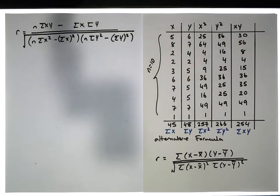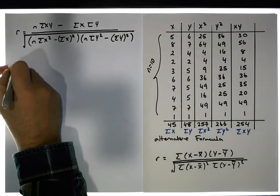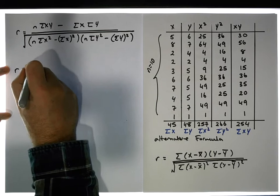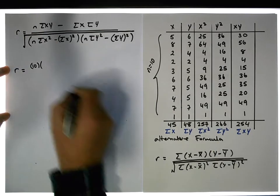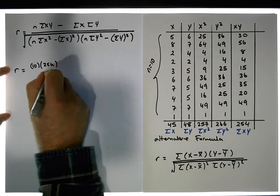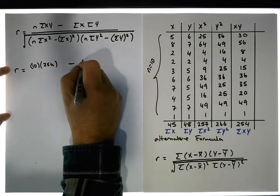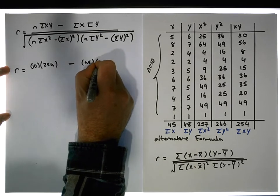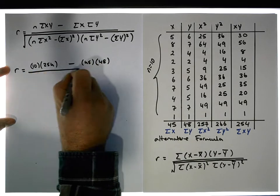So our correlation coefficient — we just substitute these in. We end up with r equal to n, which is 10 because there are 10 observations, times the sum of the x, y's, which is 254, minus the sum of the x's, which is 45, times the sum of the y's, which is 48. That's our numerator for the correlation coefficient.